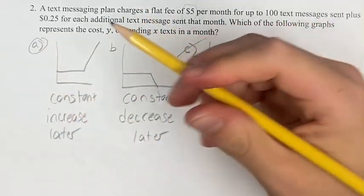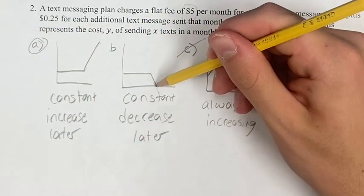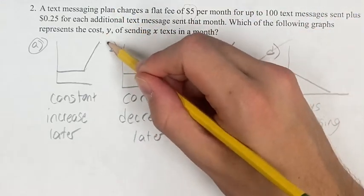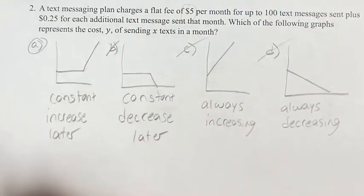So A is going to be reflecting that. B is saying it goes down as you send more text messages which doesn't make any sense. So B, C, and D are out. A is your final answer.